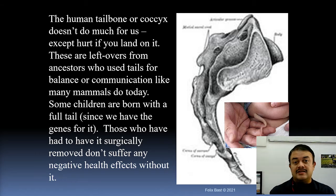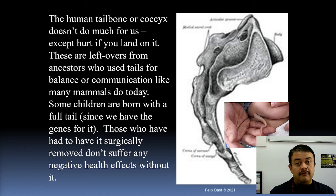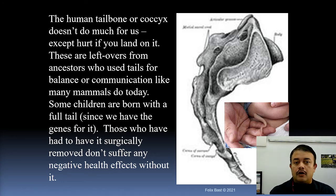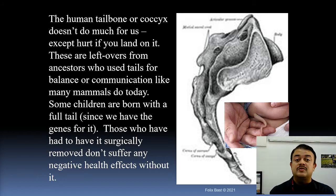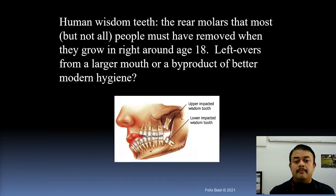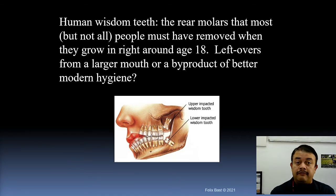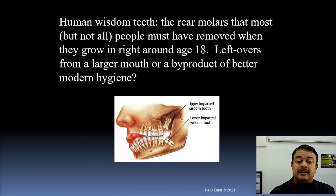Another example of a vestigial structure is the human tailbone, the coccyx. Even today, some babies are born with a vestigial tail, which shows that at one point in our evolutionary history we were animals with tails. Right now the coccyx has no real function, but it hurts a lot when you fall on it and can lead to serious spinal cord injuries — showing our body is not optimally designed.